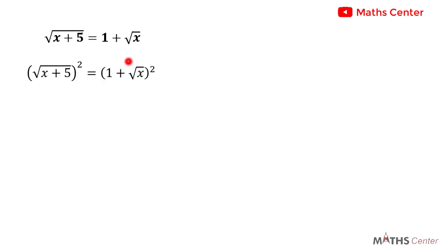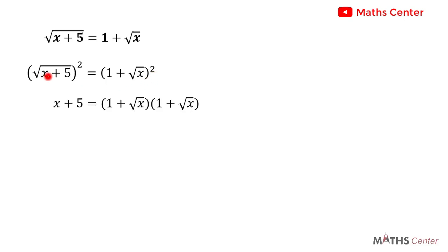We will begin by squaring both sides. So we have the square root of x plus 5, squared, equal to 1 plus the square root of x, squared. The square root of x plus 5 squared gives us x plus 5. Then 1 plus the square root of x squared gives us, in expanded form, one bracket of 1 plus root x times another bracket of 1 plus root x.